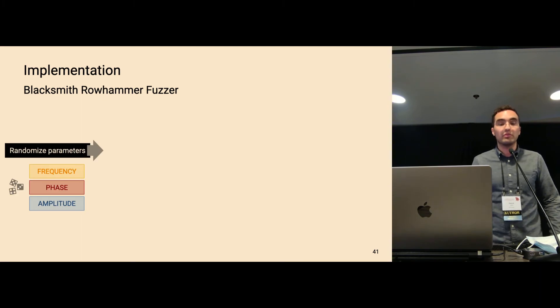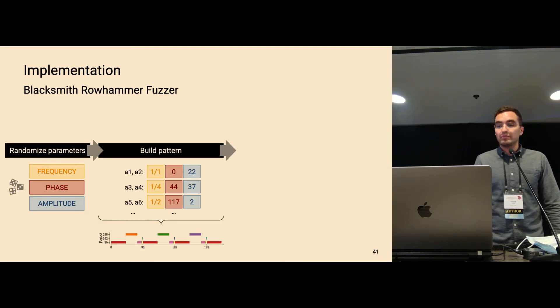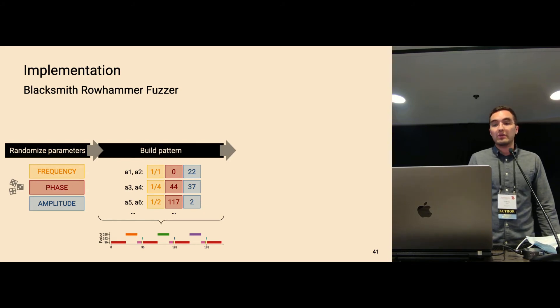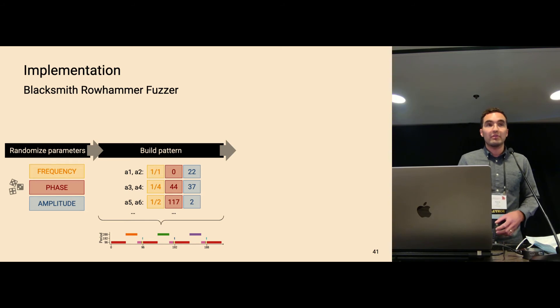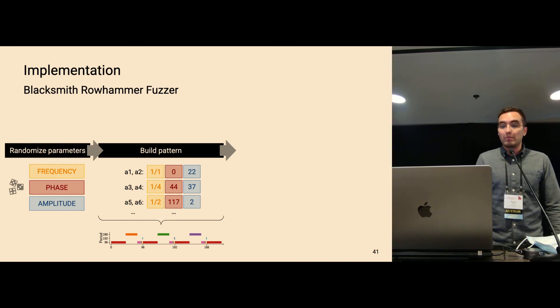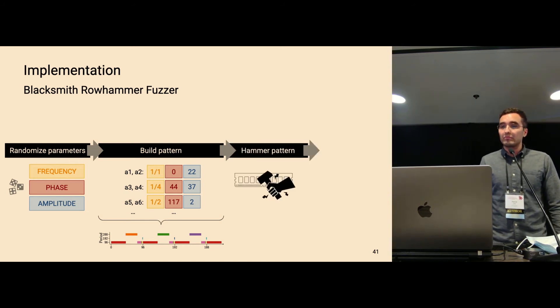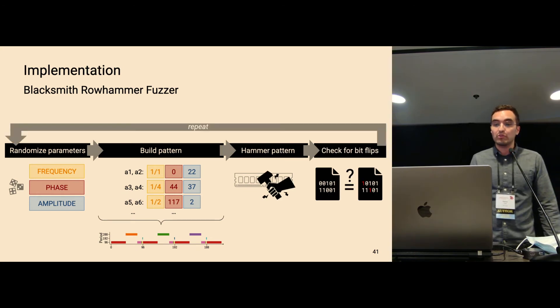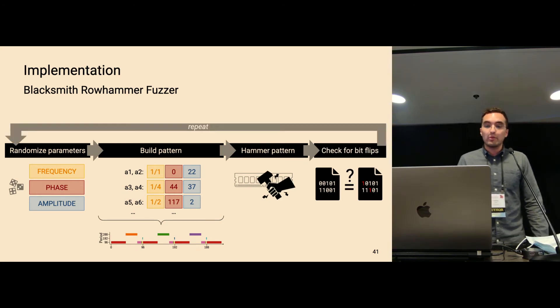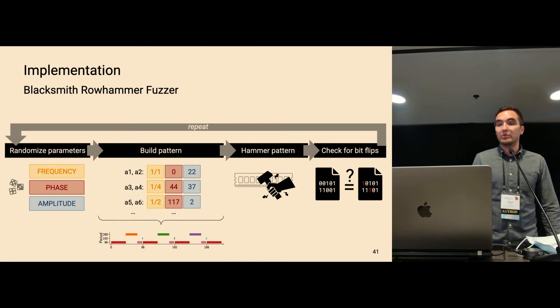And the idea of Blacksmith is the following. We have the frequency phase and amplitude that we randomize for the different aggressors in our pattern. And we do this in a way so that we have compatible values so that we can combine them into one pattern. Then we hammer the pattern and we check for bit flips. And then we repeat this procedure over again. I will now explain how this pattern building process works.